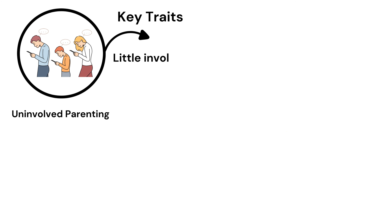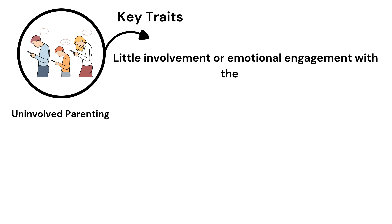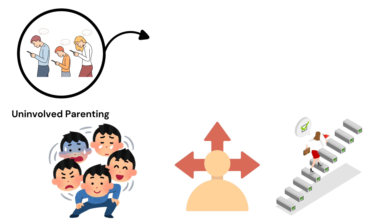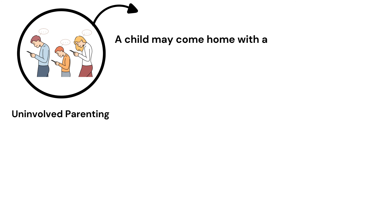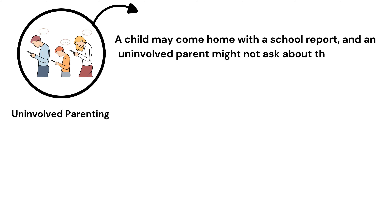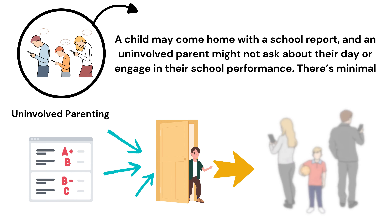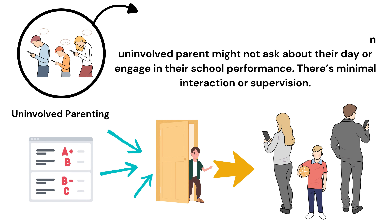Key Traits: Little involvement or emotional engagement with the child; provides minimal guidance or supervision. Example: A child may come home with a school report, and an uninvolved parent might not ask about their day or engage in their school performance. There's minimal interaction or supervision.